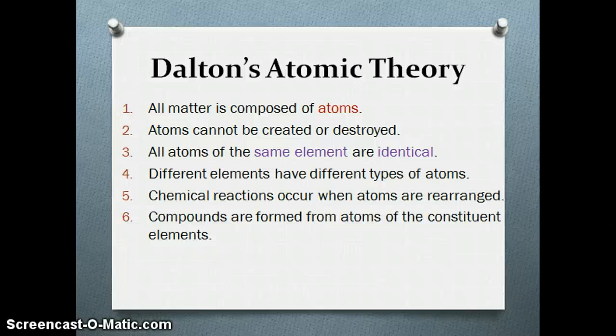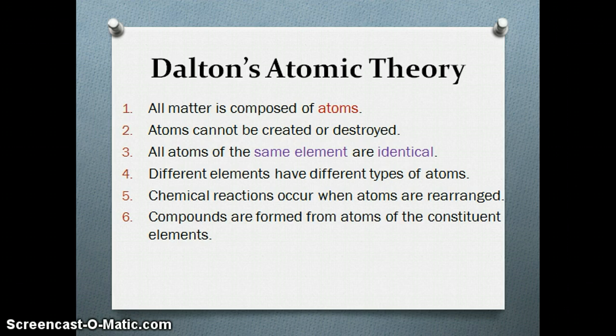Number four states that different elements will have different types of atoms. For example, in water, the hydrogen atoms will have the same size and mass — the concept of atomic weight — but they will be different from the oxygen atoms. Number five states that chemical reactions occur when atoms are rearranged; atoms cannot be created or destroyed, only rearranged to form different compounds. Number six, the last main point: compounds are formed from atoms of the constituent elements. We will use these six points to compare different scientists who worked on the atomic model.